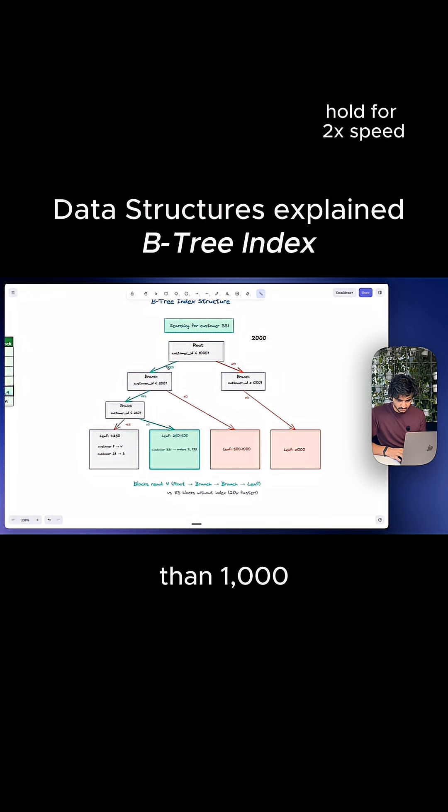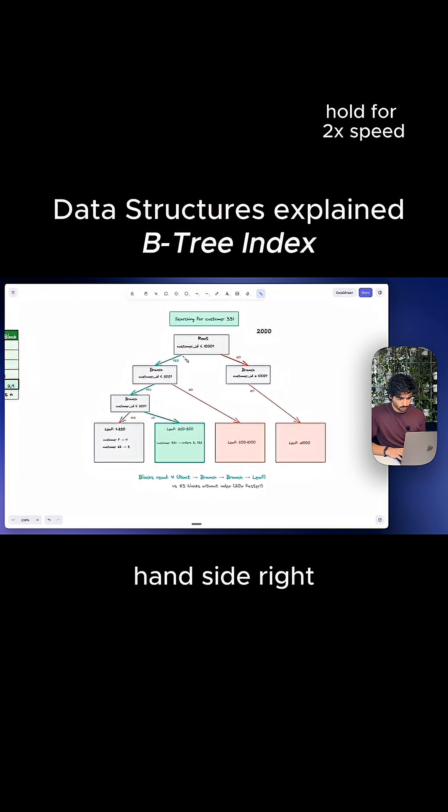331 is less than 1000. So then we go to the left hand side, right? And we've only read one index block at this point. In the next branch, we read is customer ID less than 500. Well, again, 331 is less than 500. So we can eliminate all of this right here. And we only read this branch right here. Then we do it again.